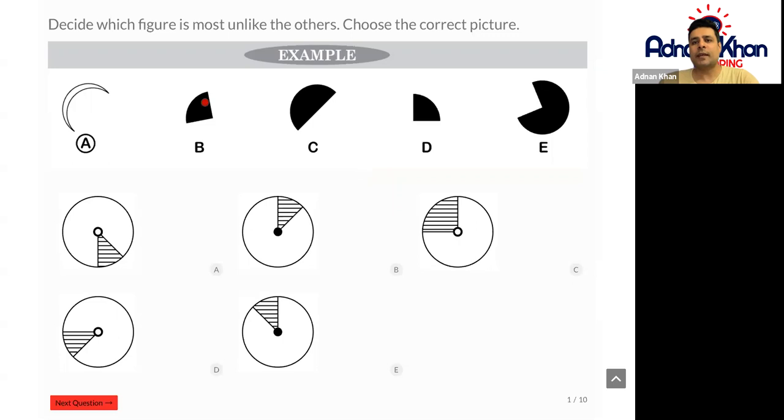You can see here that we've got some segments of circles. We've got a semicircle, a quarter of a circle, a quarter of a circle, and three quarters of a circle. They're exact segments, like a quarter, a half, and three quarters, and they're all colored black.